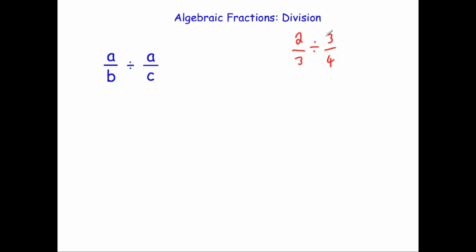What I do is I multiply by the reciprocal of the second fraction — some students call it keep, change, flip. I'm going to take two thirds and multiply it by the reciprocal of the second fraction, which is four thirds. Then I simply multiply the top numbers together: 2 times 4 is 8, and the denominators: 3 times 3 is 9. So two thirds divided by three quarters equals eight ninths.